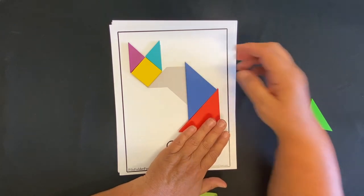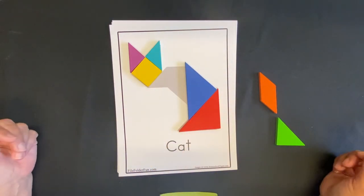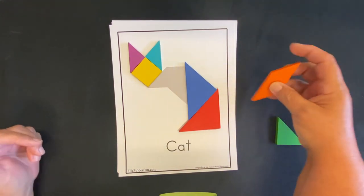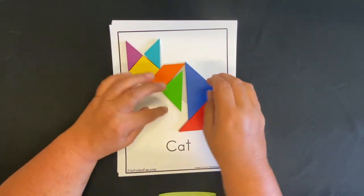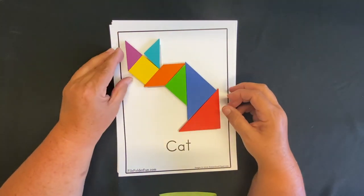Now we have to figure out how we're going to put the parallelogram and the medium triangle in there. Here we go, like this and like this. And this is our cat.